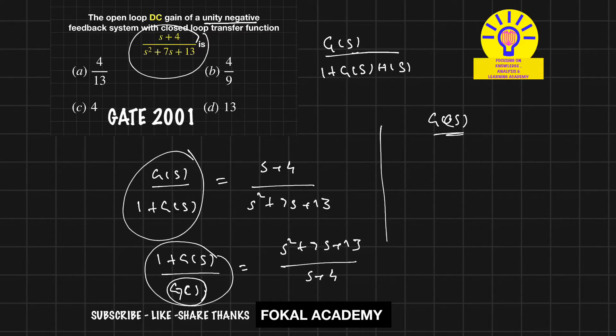Then it becomes 1 by G(s) plus 1 equals s squared plus 7s plus 13 divided by s plus 4.